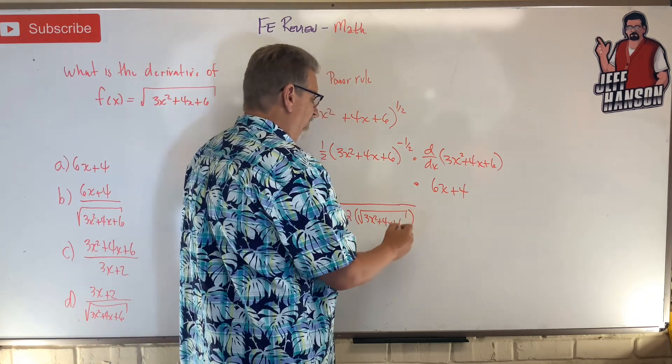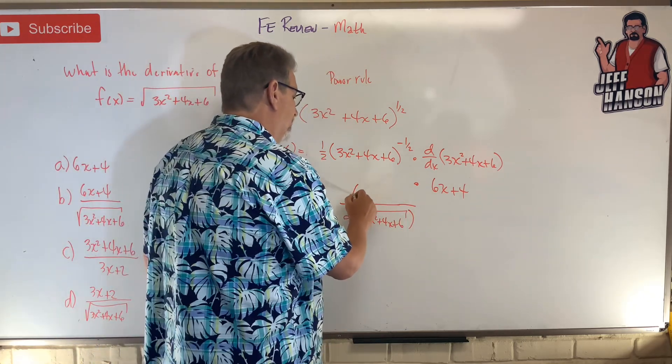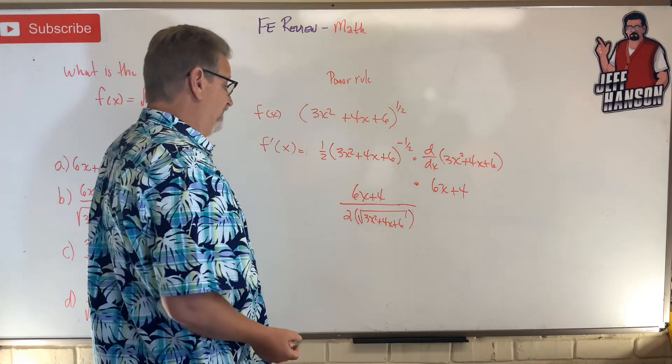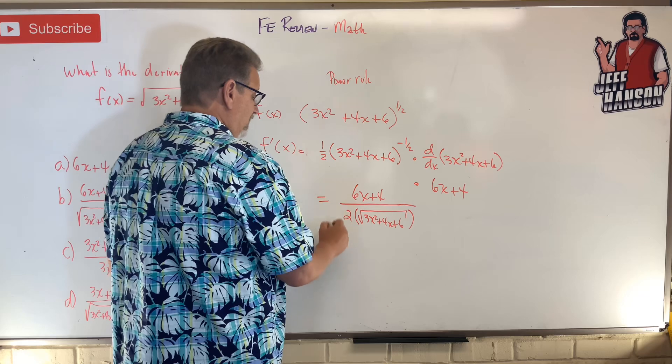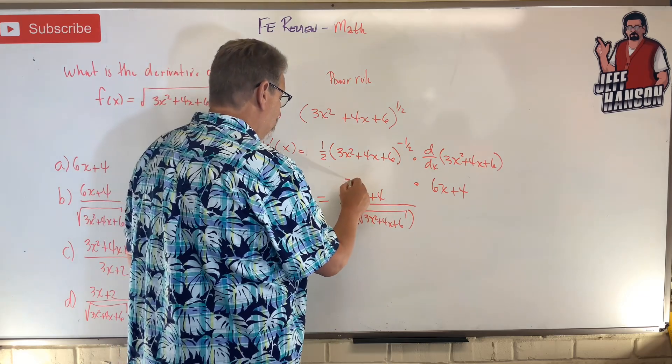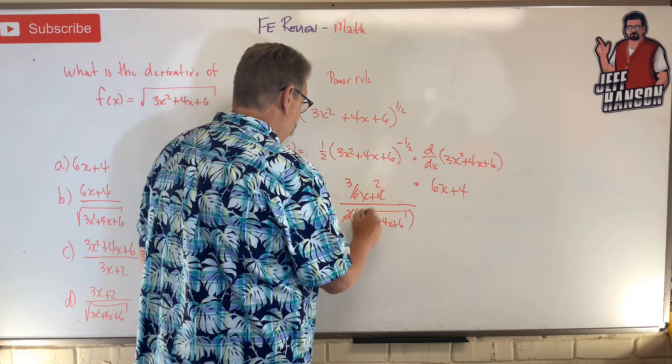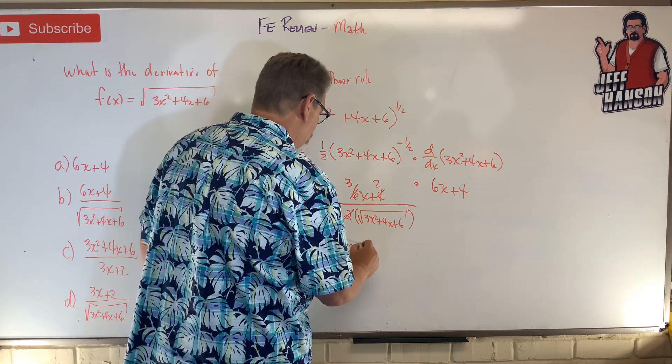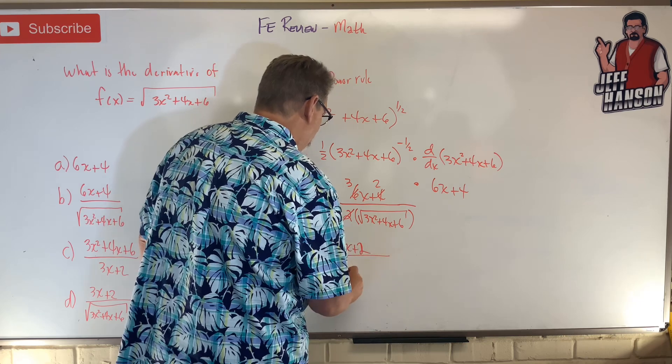And then on the top I'm going to have 6x plus 4. Now the only thing left to do here that I can do is divide everything by 2. So you go away, you turn into a 3, you turn into a 2. So my final answer is 3x plus 2 divided by the square root of 3x squared plus 4x plus 6.